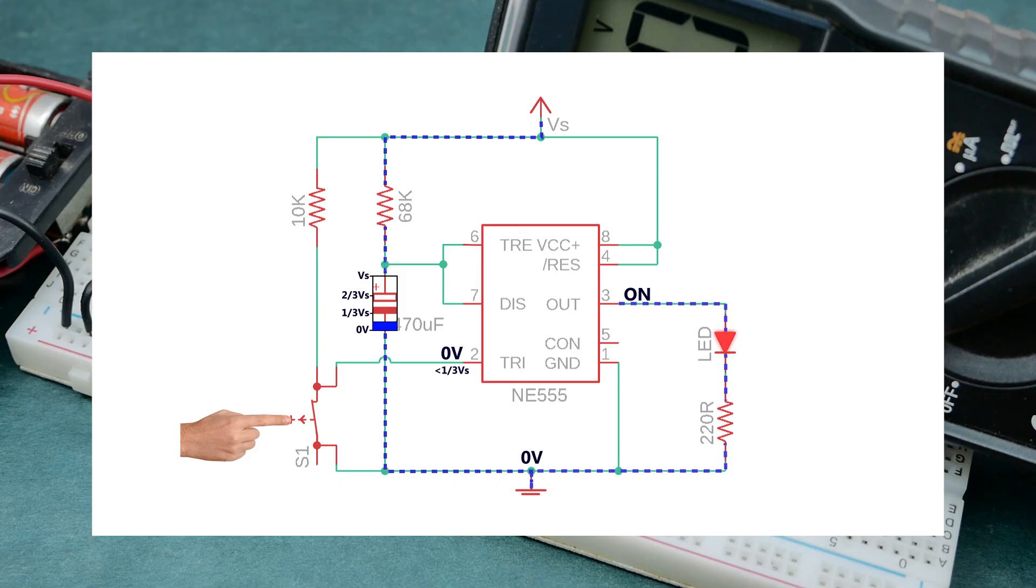This time period for which the capacitor charges from 0V to two-thirds of the supply voltage is the delay time. As soon as the output turns OFF, pin 7 is internally reconnected to 0V and the capacitor is discharged completely and these steps are repeated each time the pushbutton switch is pressed.